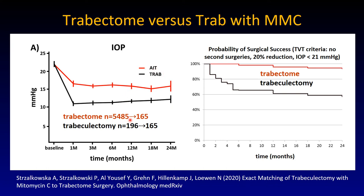From Würzburg, looking at around 200 trabeculectomy patients matched to ab interno trabeculectomy patients out of 5,500, we ended up with closely matched patients. There is a big difference: the Trabectome group is at around 15 mmHg while trabeculectomy ends up around 12 mmHg. There is also a difference in surgical success — interestingly the higher-pressure ab interno trabeculectomy has a higher success rate because we also counted secondary surgeries, and trabeculectomies need a lot of interventions to make them work.